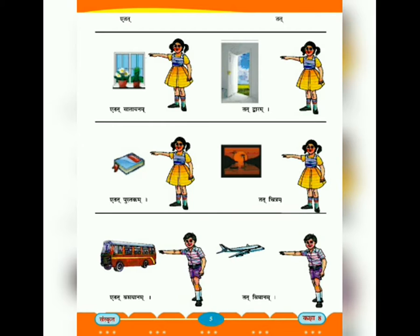ત્યારબાદ 'એતત' અને 'તત' સર્વ નામ વિશે જાણીશું. આ સર્વ નામ નપુંસકલિંગ નામ સાથે વપ્રાય છે. અહીં 'એતત' નો અર્થ 'આ' અને 'તત' નો અર્થ 'પેલું' થાય. 'તત' વાતાય - આ બારી છે. 'તત દ્વારમ' - પેલું બારણું છે. 'એતત પુસ્તકમ' - આ ચોપડી છે.